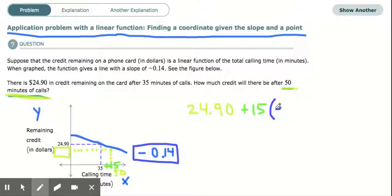So you're going to write this as an expression to represent that. So let's translate what this means. This is how much credit you have, and then you called for 15 more minutes, and each minute was costing you 14 cents.